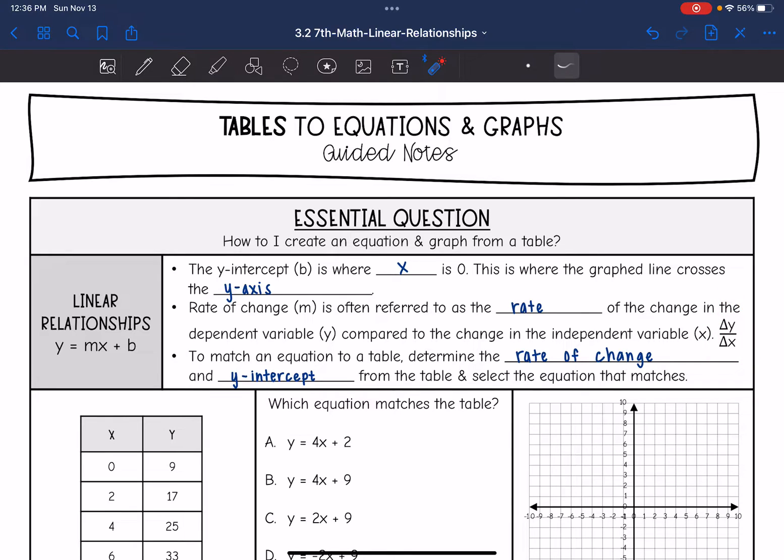So to match an equation to a table, you need to determine the rate of change and the y intercept from the table, and then we can select the equation that matches it, and then we can use the equation and or table to create the graph.